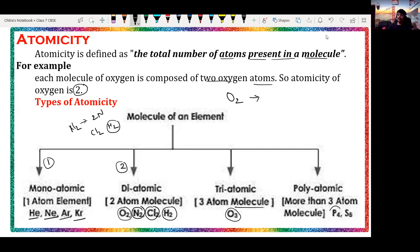Examples of polyatomic molecules include phosphorus, which is present in P4 form, and sulfur. Many compounds and elements have more than three atoms in their structure. For instance, sulfur has 6 atoms present in its molecule. These all illustrate atomicity.